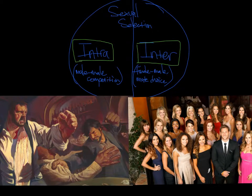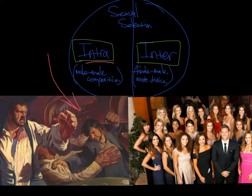There are two types of sexual selection. Number one, Intrasexual Selection is male-on-male competition based on the limited amount of females. Number two, Intersexual Selection is based on female-on-male mating choice where one sex chooses among the other.